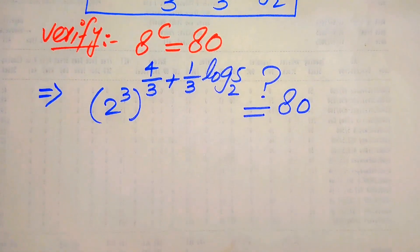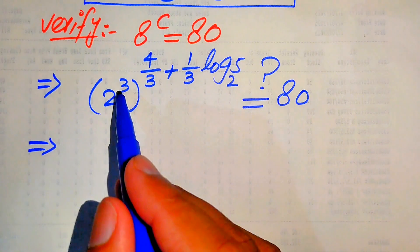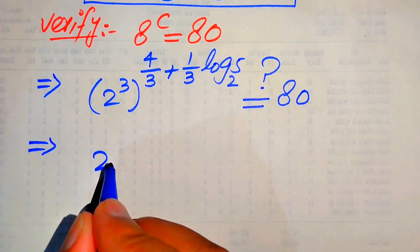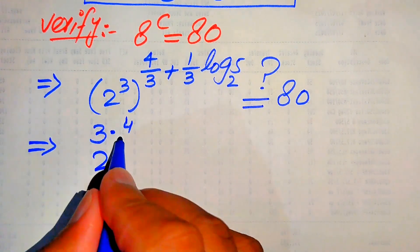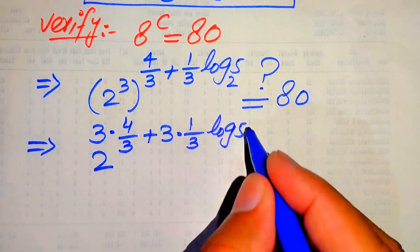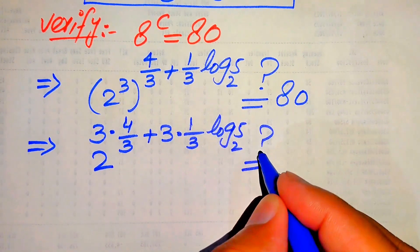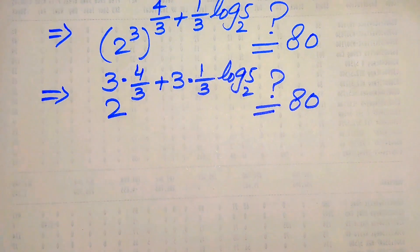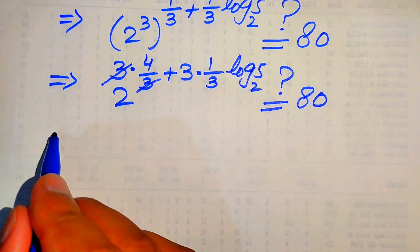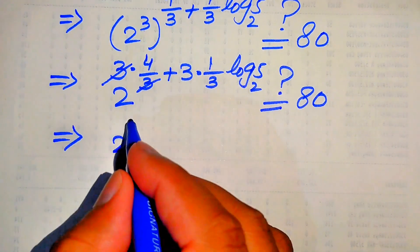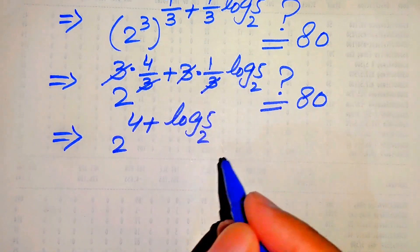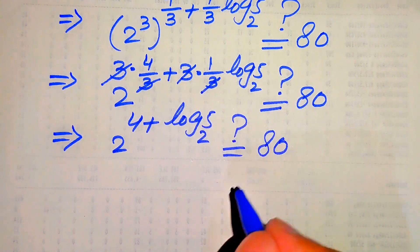Using the exponent law, we multiply exponent 3 onto each term. After multiplying, it is written as 2 to the power of 3 times 4/3, plus 3 times 1/3 times log 5 base 2. After simplification, the 3s cancel and we get 2 to the power of 4, plus log 5 base 2 as the exponent.